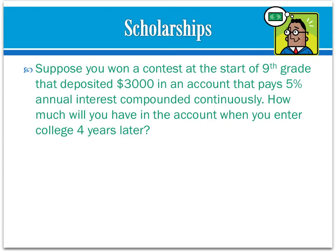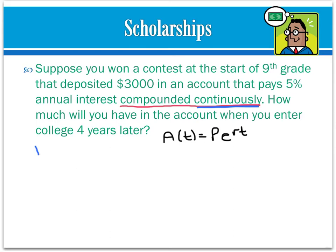Suppose you won a contest at the start of your 9th grade year that deposited $3,000 into an account paying 5% annual interest compounded continuously. How much will you have when you enter college 4 years later? The reason we use PERT here is because of the words 'compounded continuously' — you can only use PERT when interest is compounded continuously. So: principal P equals $3,000, rate r equals 5% or 0.05, and time t equals 4 years. We want to find A of 4.